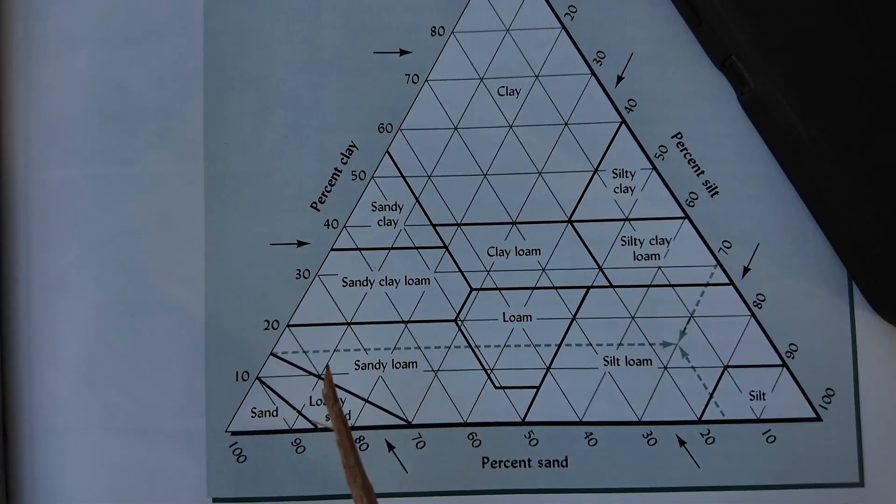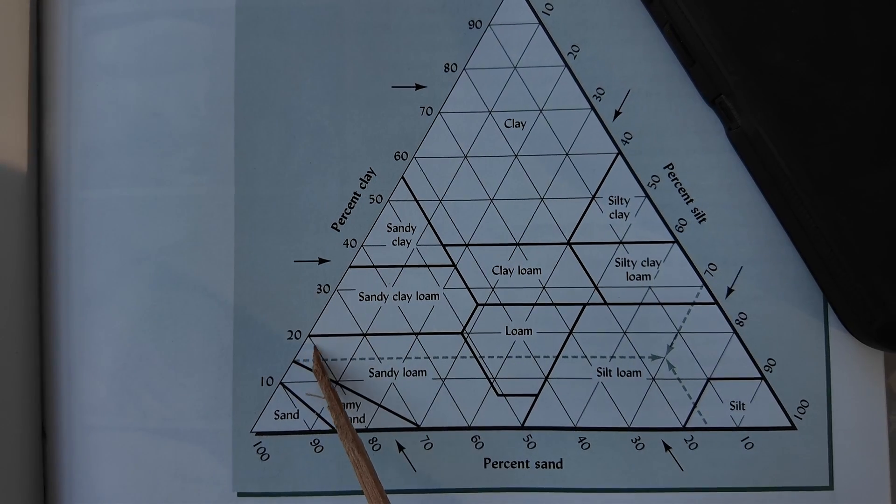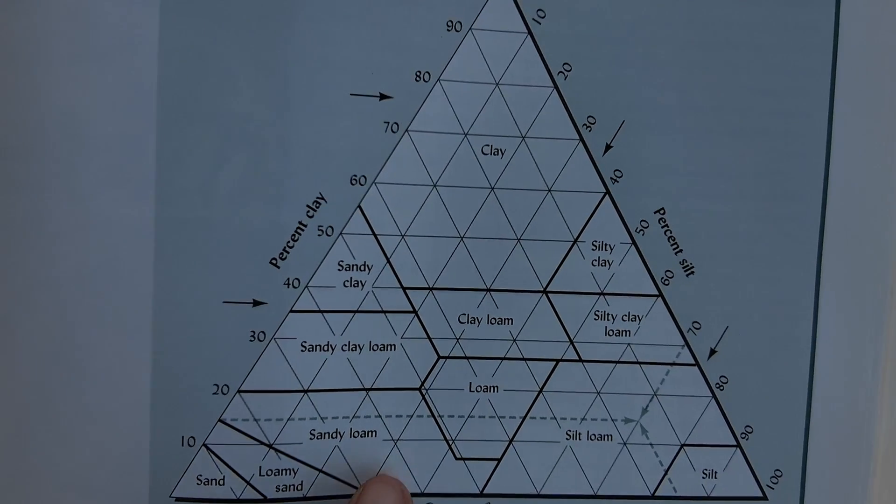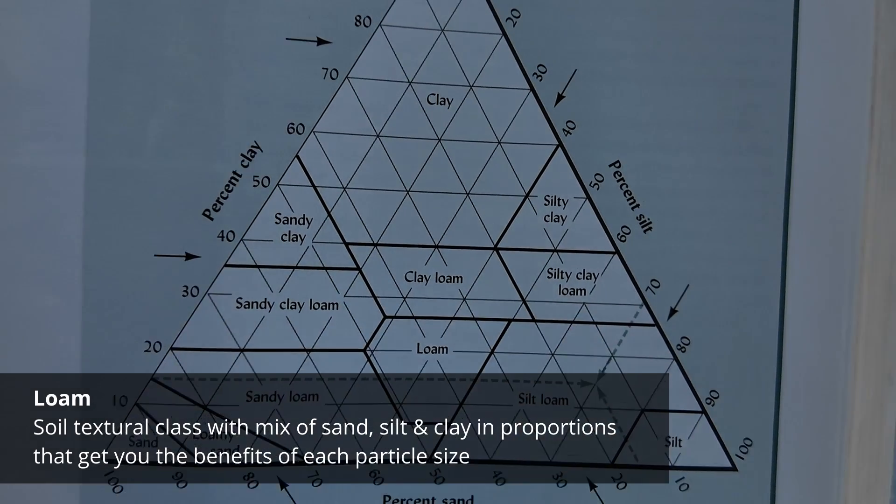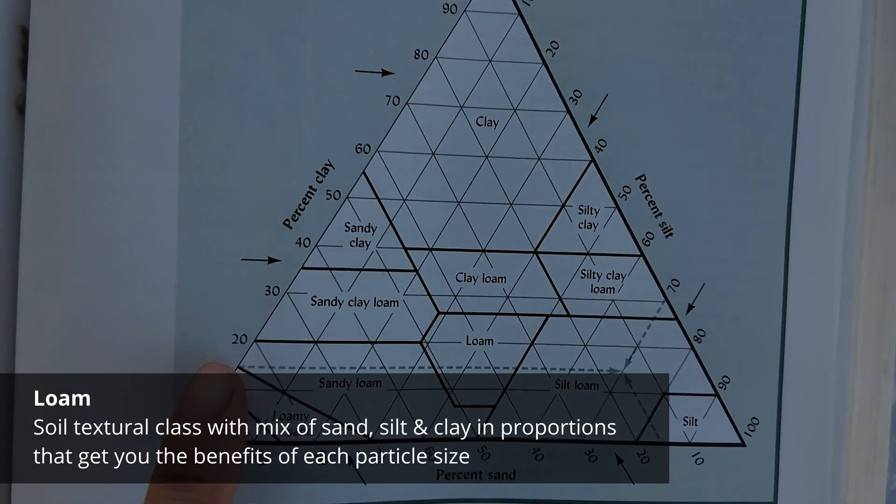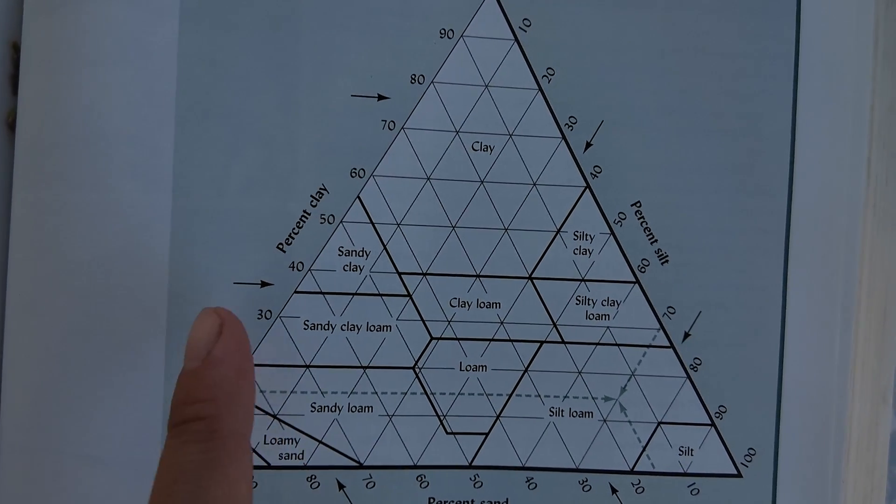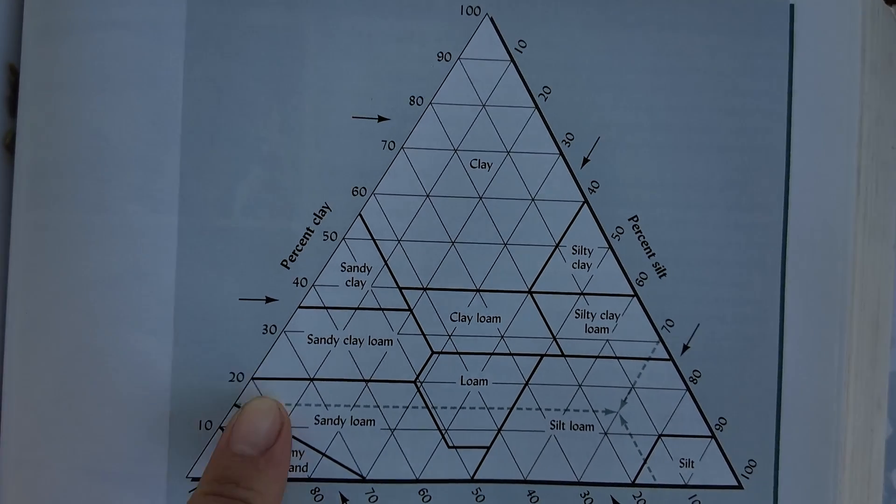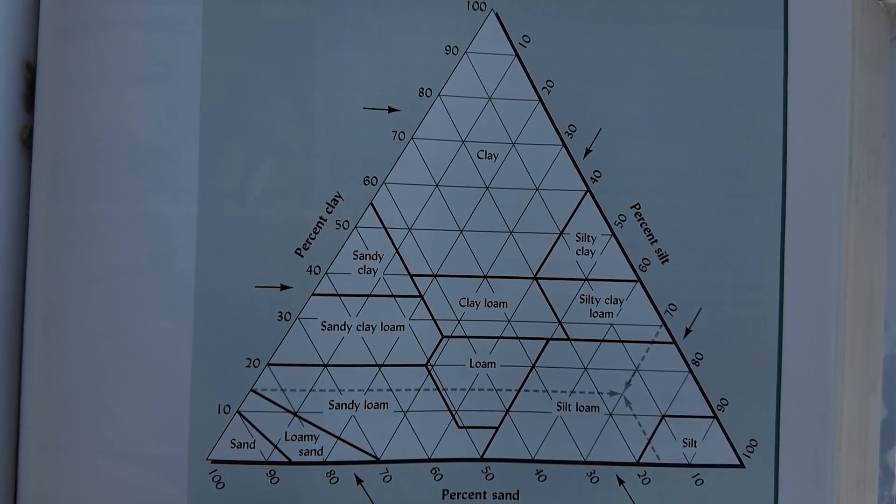You can see here every soil class above this line has clay in the name so you really only need about 20 to 25% clay to make that a fairly dominant trait. You'll often run into the term loam with sand, silt, and clay but it doesn't describe a particle size like those three terms. What it describes is one of the soil texture classes. It's a mix of the three particle sizes but in proportions that get you the benefits of each of the sizes. For example you only need a small percent clay to get the benefits of clay because of its surface area and you can have a higher percentage of sand and silt to get good drainage and so on.